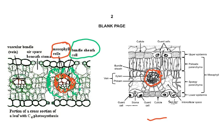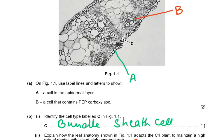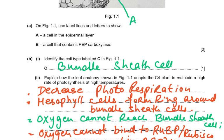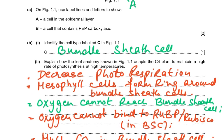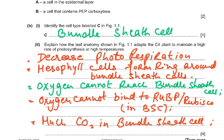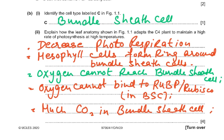We need to be very clear on what is the bundle sheath cell and what are the mesophyll cells. A cell in the epidermal layer — if you understood C was the bundle sheath cell, then the ones outside are the mesophyll cells. The next question asks: explain how the leaf anatomy in figure 1.1 adapts the C4 plant to maintain a high rate of photosynthesis at high temperatures.